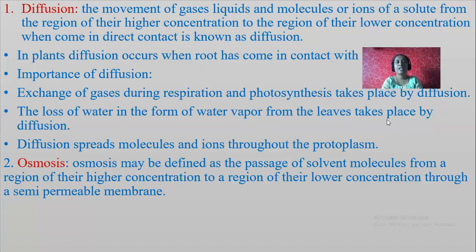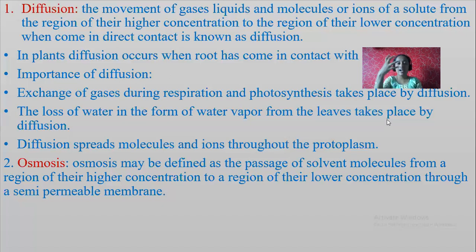Importance of diffusion: exchange of gases during respiration takes place through diffusion. For photosynthesis, carbon dioxide is required; for respiration, oxygen is required. How do carbon dioxide and oxygen enter into the plant body? Through the process of diffusion. The loss of water in the form of water vapor from the leaves also takes place by diffusion — that is transpiration — through the surface of the leaf during daytime when sunlight is more.